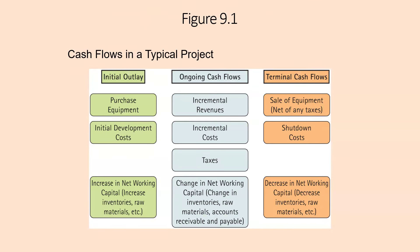Here is Figure 9.1: cash flows in a typical project. You have the initial outlay — purchase equipment, initial development costs, increase in net working capital, increase in inventories, raw materials, etc. Then you have the ongoing cash flows: incremental revenues, incremental costs, taxes, and change in net working capital — change in inventories, raw materials, accounts receivable, and payable. And in the third column, you'll see terminal cash flows, which may involve sale of equipment net of any taxes, shutdown costs, and decrease in net working capital, decrease in inventories, raw materials, etc.